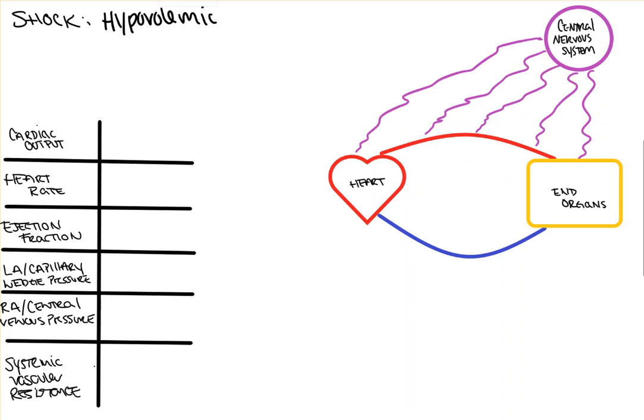So I've drawn the diagram I'll use for all of my shock videos here. We have the heart, the arterial system which gets blood to the tissue, the venous system which returns blood from the tissue to the heart, and then we have our nervous system which innervates the whole thing.